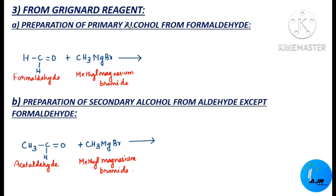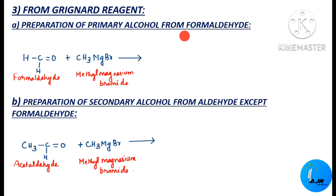The next methodology is very important — that is from the Grignard reagent. All three types of monohydric alcohols can be obtained from suitable aldehydes and ketones with a Grignard reagent followed by acid hydrolysis. It is possible to obtain primary, secondary, and tertiary alcohols using a Grignard reagent followed by hydrolysis using acid.